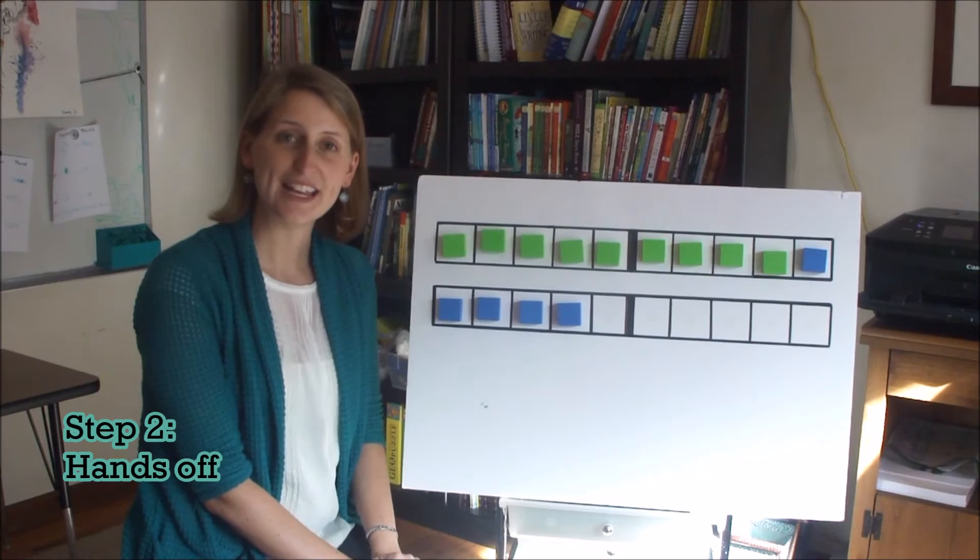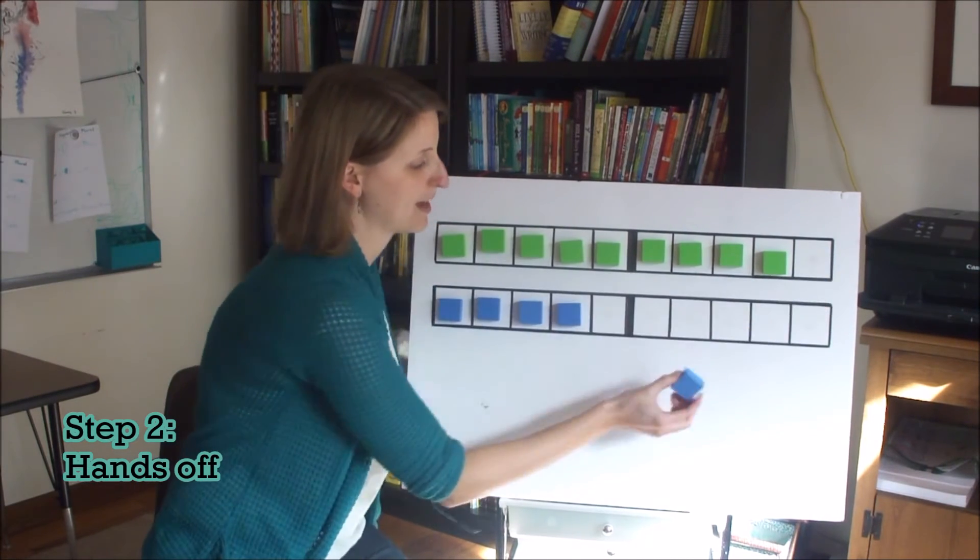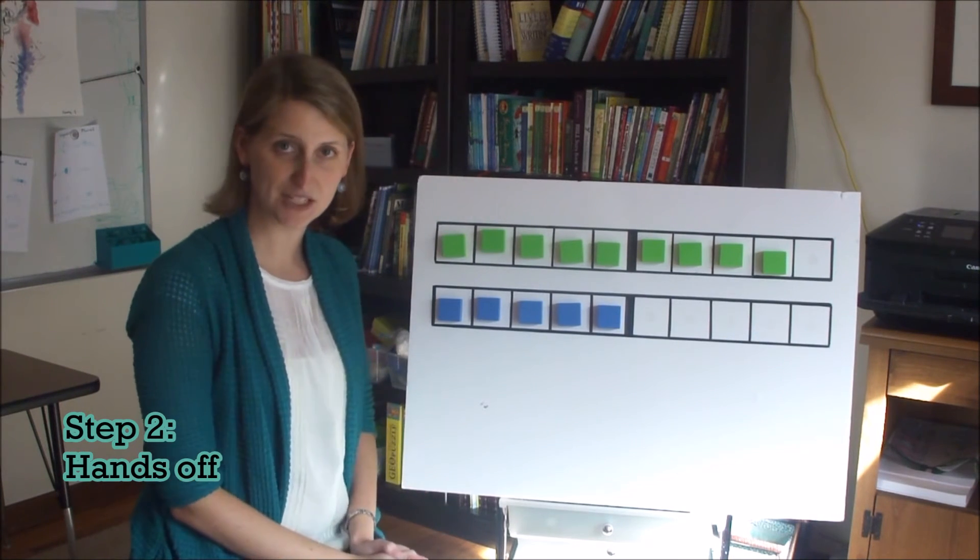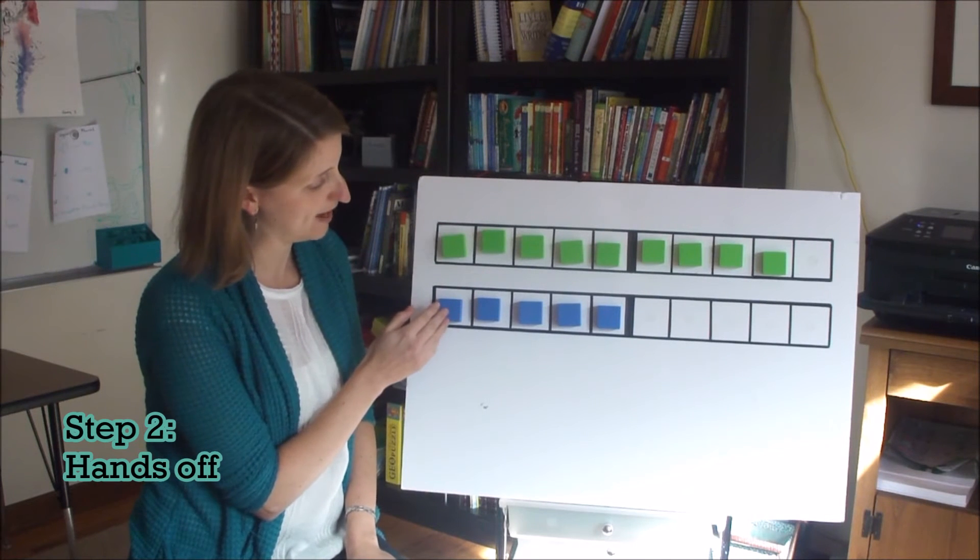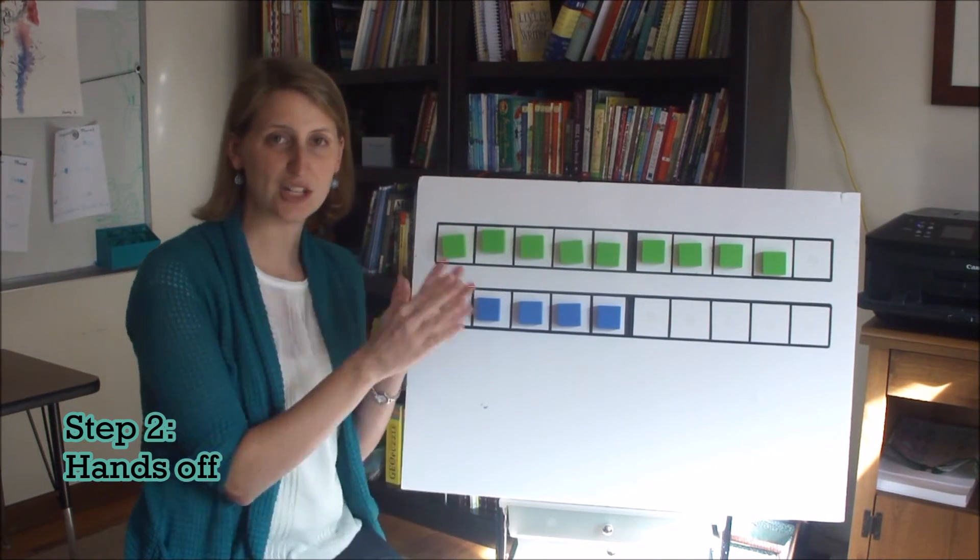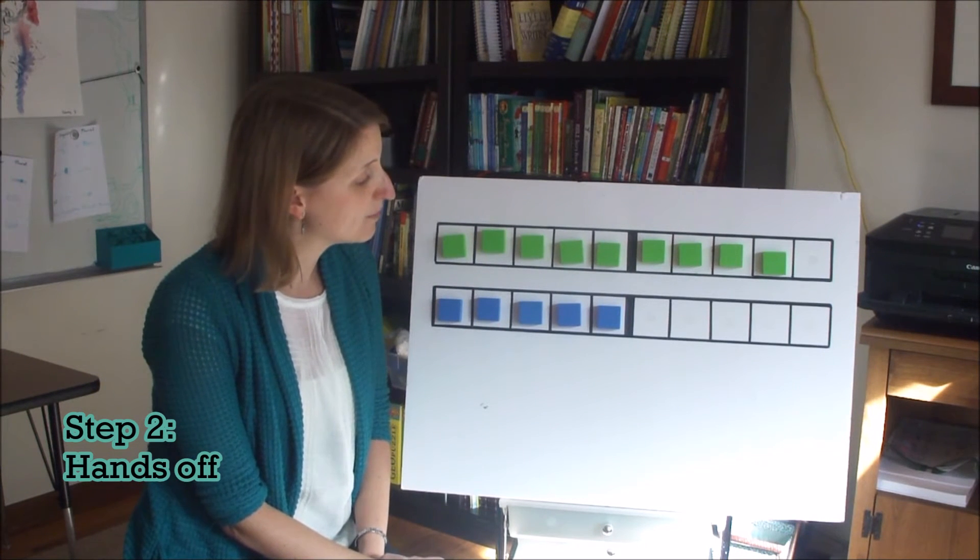And stage 2 is having hands off the blocks. And here's what I mean by that. In this stage, when your child sees a problem like 9 plus 5, she sets up the problem. So here's the 9 plus the 5. But once she has it set up, she doesn't move the blocks. Instead, she keeps her hands off the blocks and visualizes moving them.